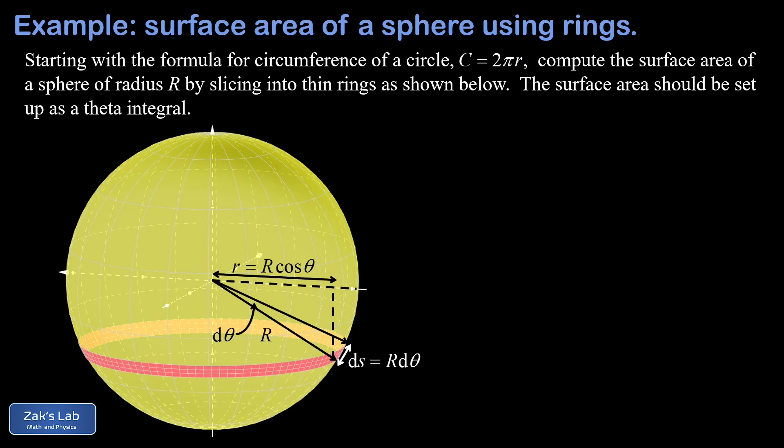Now that all the dimensions of this ribbon are labeled, we slice it and unroll it into a thin rectangle. We can label the dimensions of this rectangle, starting with the thickness ds, which is just given by R times d theta.